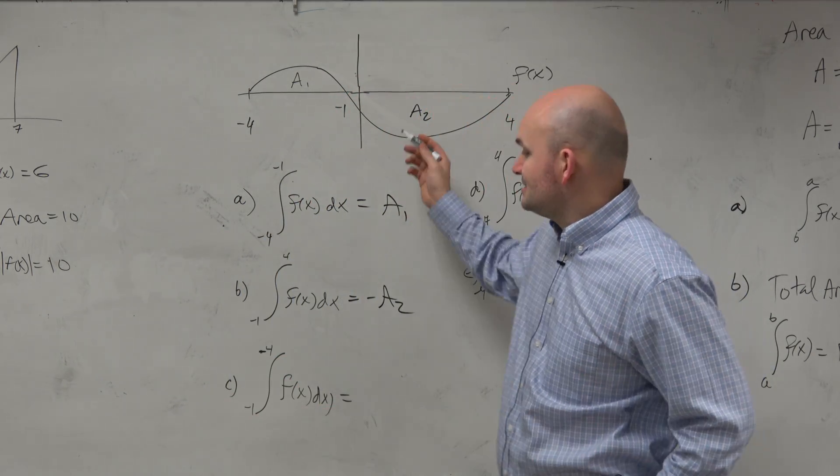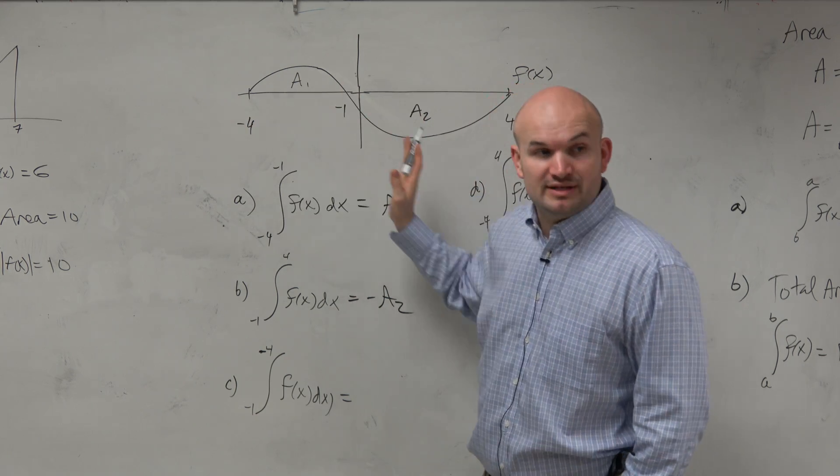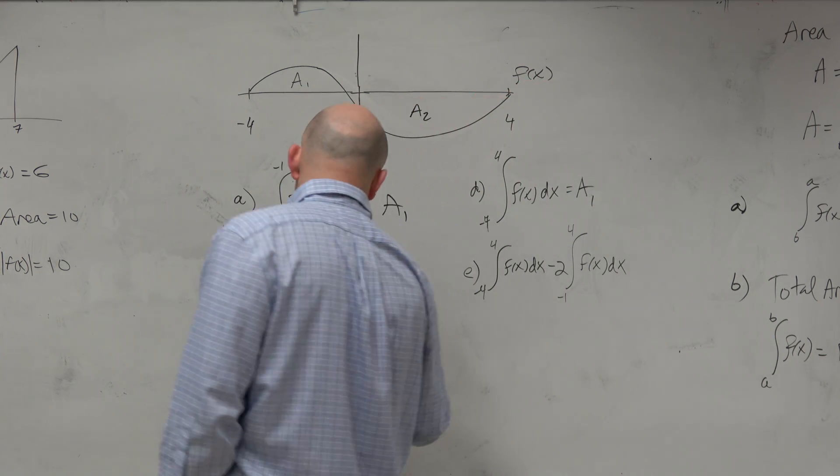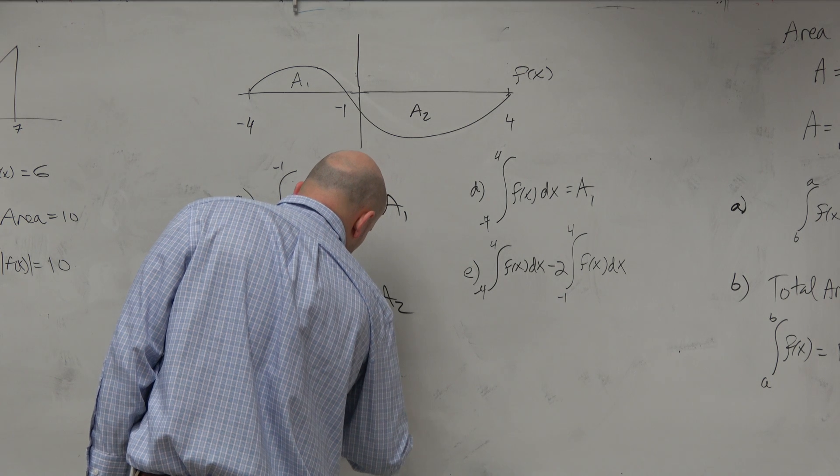In the same respect here, now we're going from negative 1 to 4, so we're going in that opposite direction. That's why this one is negative A1.